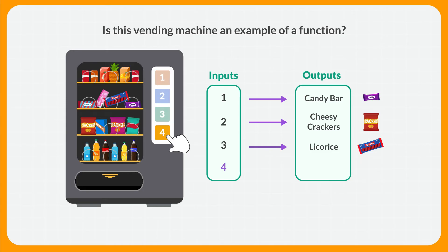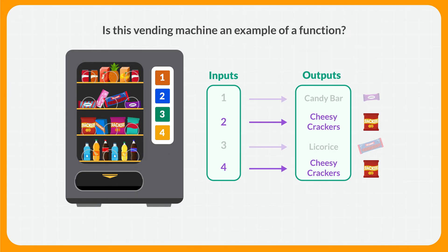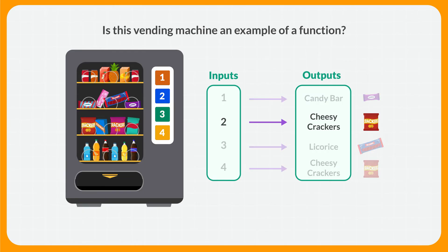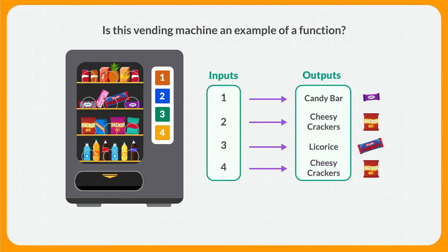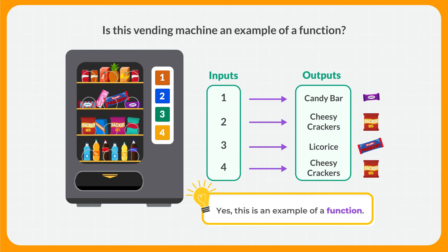Let's press the fourth button. When the fourth button is pressed, another bag of cheesy crackers comes out of the vending machine. Now, both the second and fourth buttons have the same output — bags of yummy cheesy crackers. Is this vending machine still an example of a function? Each input needs to have exactly one output. Button two has exactly one output: cheesy crackers. Button four has exactly one output: cheesy crackers. It's okay that these two inputs share the same output. Even if every button on this machine produced a bag of cheesy crackers, it would still be a function, as long as each input produces exactly one output. So this vending machine is an example of a function.